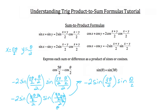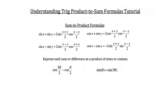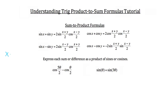Now let's take a look at the problem on the right. In this case, we have a sine plus another sine — a sum of sines. We can use the sum of sines formula. Our x value is going to be theta, so x equals theta, and our y value is three theta, so y equals three theta. We'll plug those x and y values into the right side of the equation.